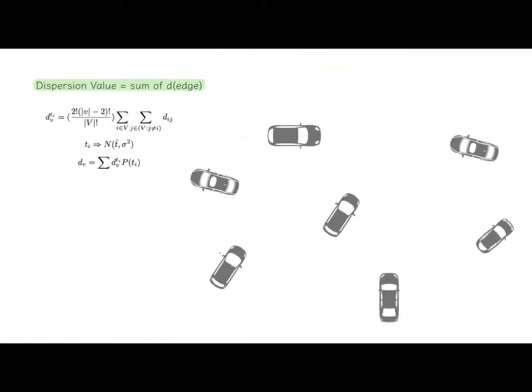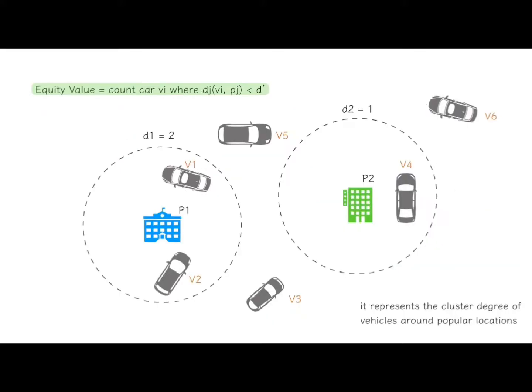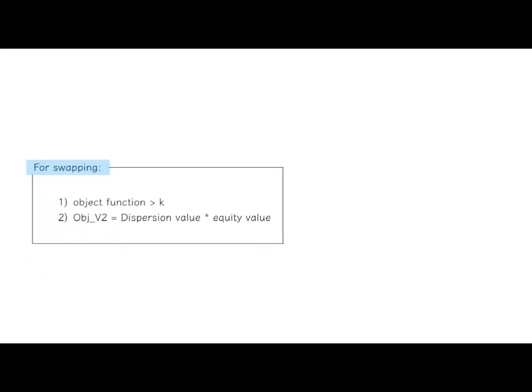For the dispersion value, we measure the degree of dispersion for the system by simply adding up the distance between each pair of vehicles. And for the equity value, it represents the cluster degree of vehicles around popular locations. Here we have the specified radius k, therefore the number of vehicles that we see in those circles are considered to be the equity value.